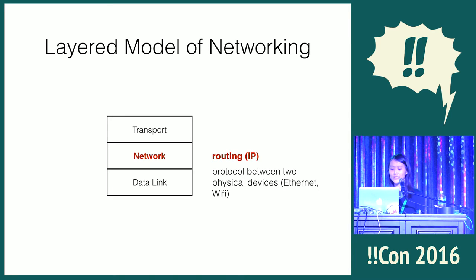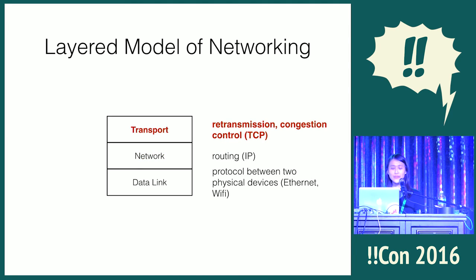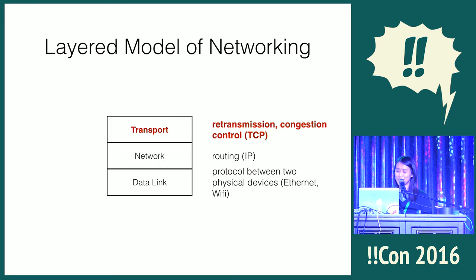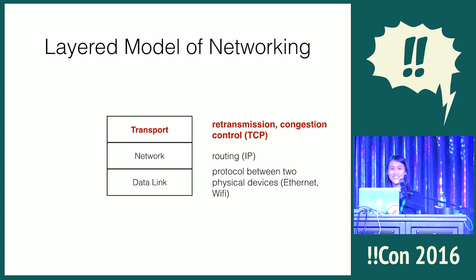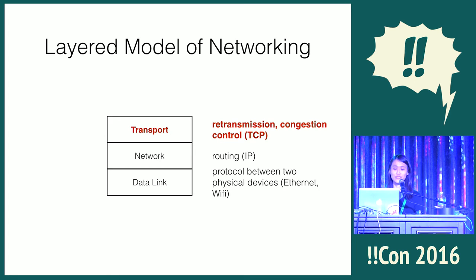IP routing is the most common protocol for the network layer, and it has the abstraction of sending data from one IP address to another. But IP doesn't guarantee that your data gets delivered — what if your pigeon gets shot down? The transport layer takes care of this by retrying with new carrier pigeons until your data gets delivered. This is referred to as retransmission. TCP is the most common protocol for this layer.